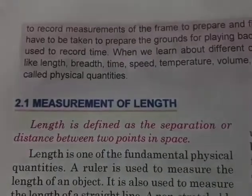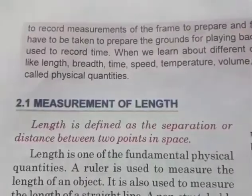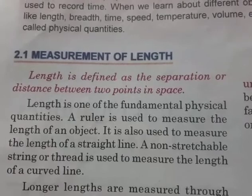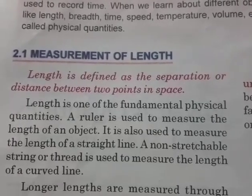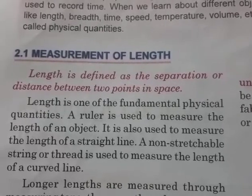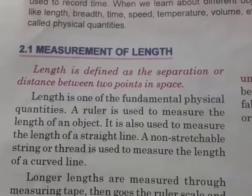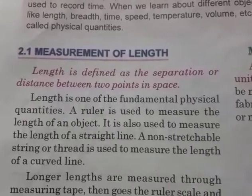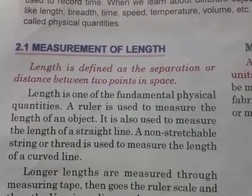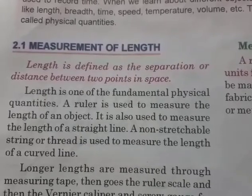Under various devices, we will deal with the measurement of length. Length is defined as the separation or the distance between any two fixed points in space. Length is a fundamental physical quantity, meaning it is independent of any other thing. For example, speed directly depends on distance or time, but length is independent of any other object or substance. So it is called a fundamental physical quantity.